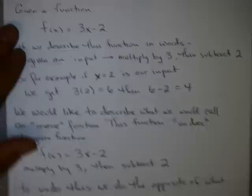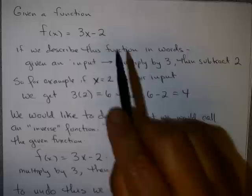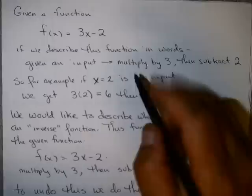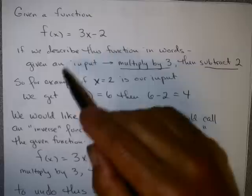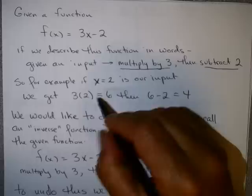Let's think about the function f of x equals 3 times x minus 2. If we describe this function in words, this means given an input x, you multiply by 3, and then you subtract 2. For example, if I let x equals 2, the first thing I'm going to do is multiply by 3 and get 3 times 2 equals 6. Then I take that answer and subtract 2 and get 4.